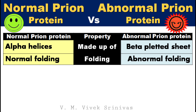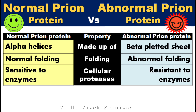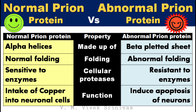In normal prion proteins, protein folding is normal, but in abnormal prion proteins, protein folding is abnormal. The normal prion proteins are sensitive to proteolytic enzymes — that is, they are easily broken by cellular proteolytic enzymes — but the abnormal prion proteins are resistant to these proteolytic enzymes. The function of normal prion proteins in the brain is intake of copper into neuronal cells, but the function of abnormal prion proteins is to induce apoptosis of neuronal cells.